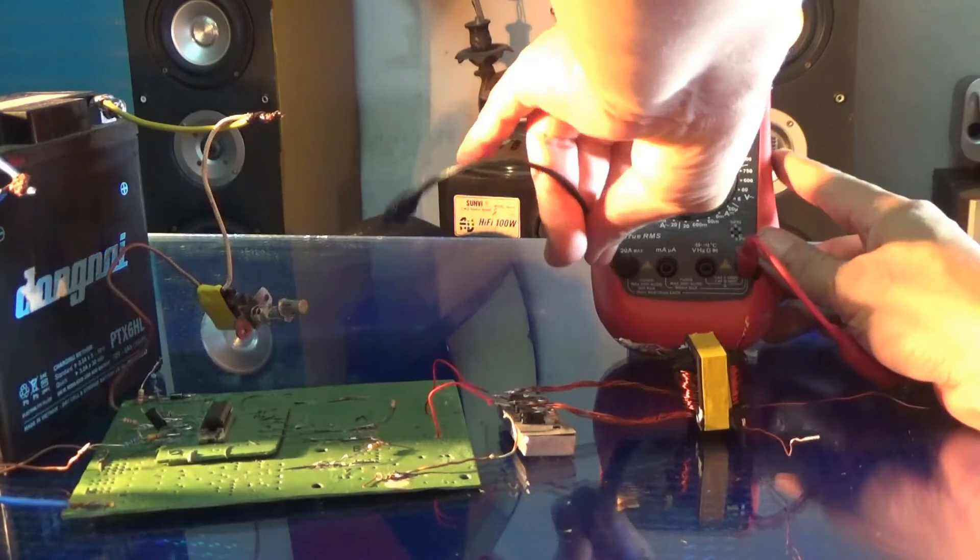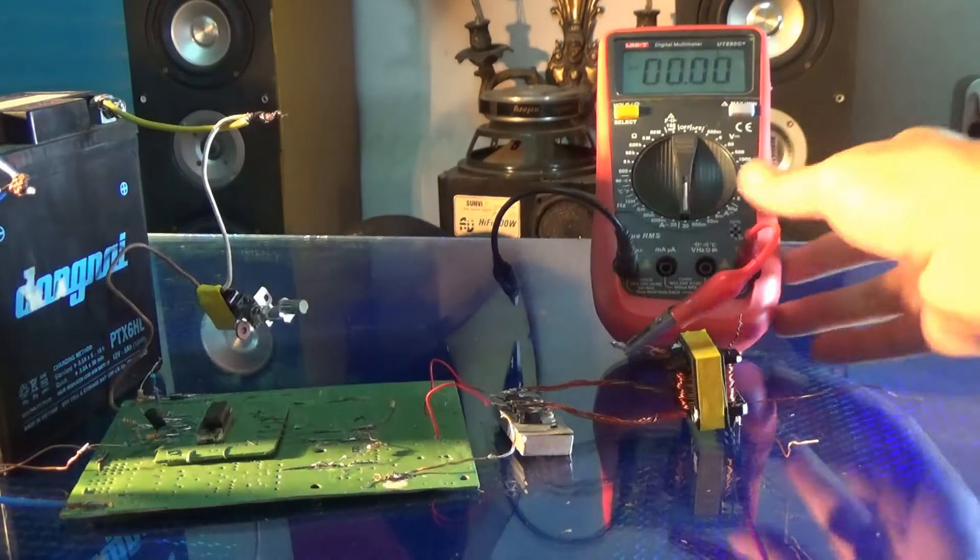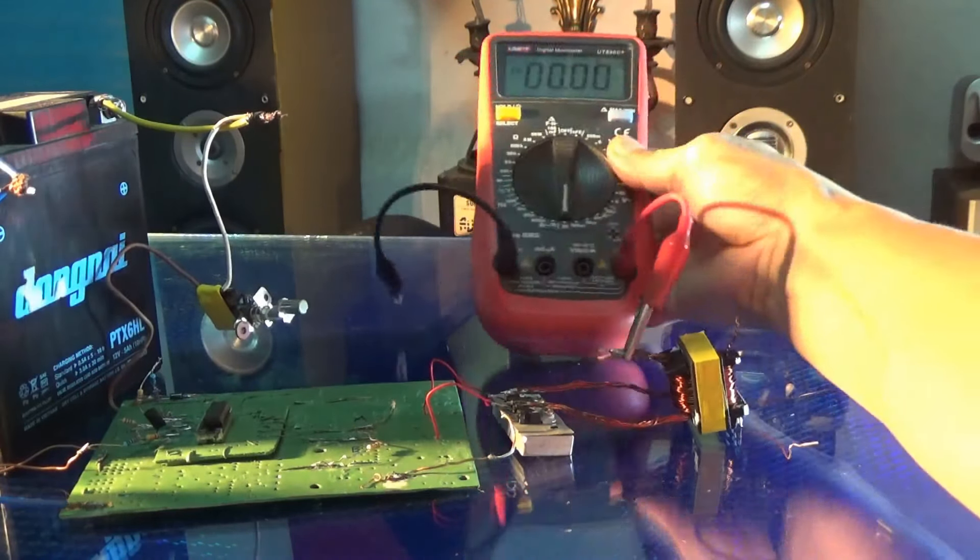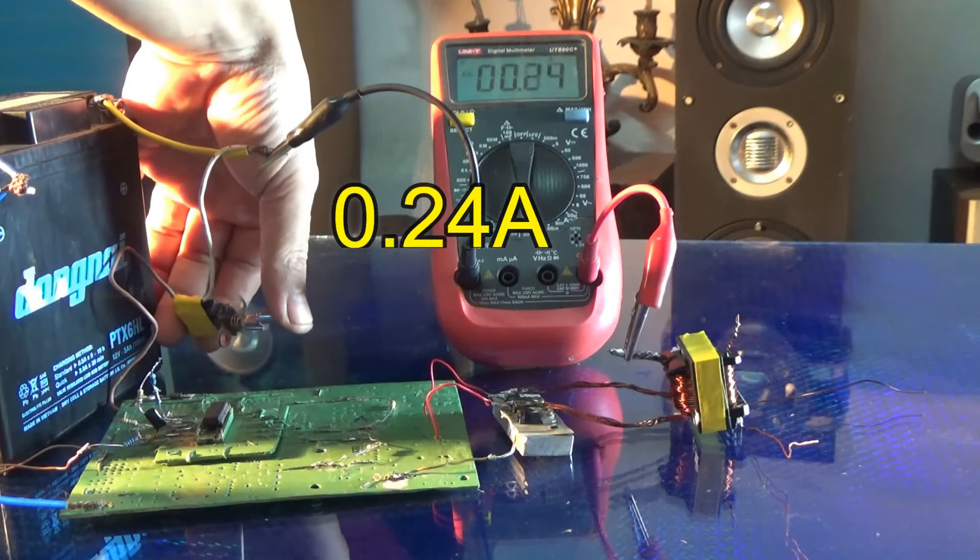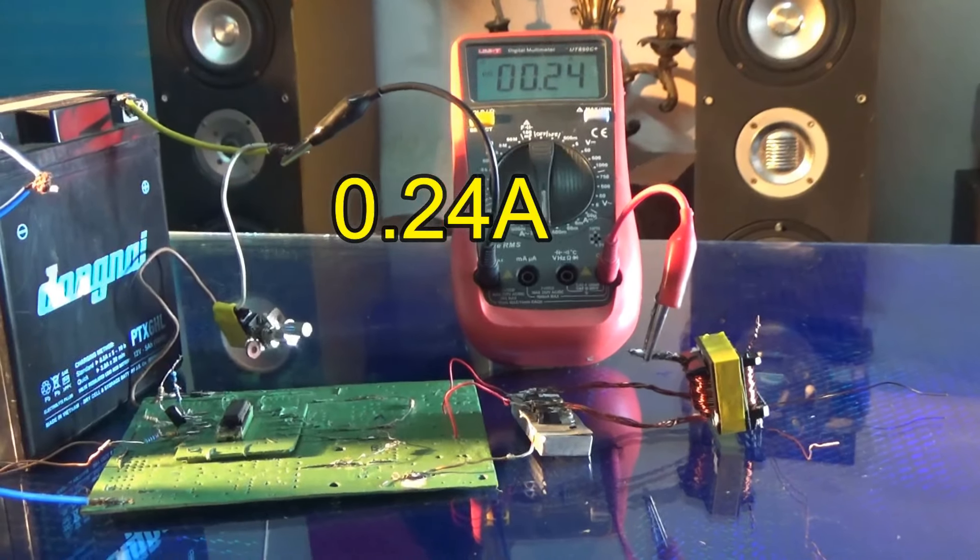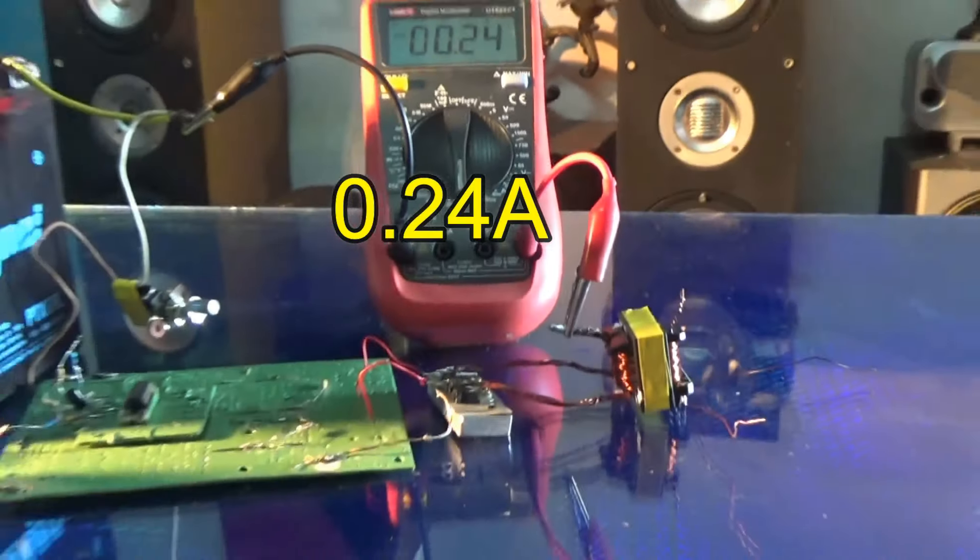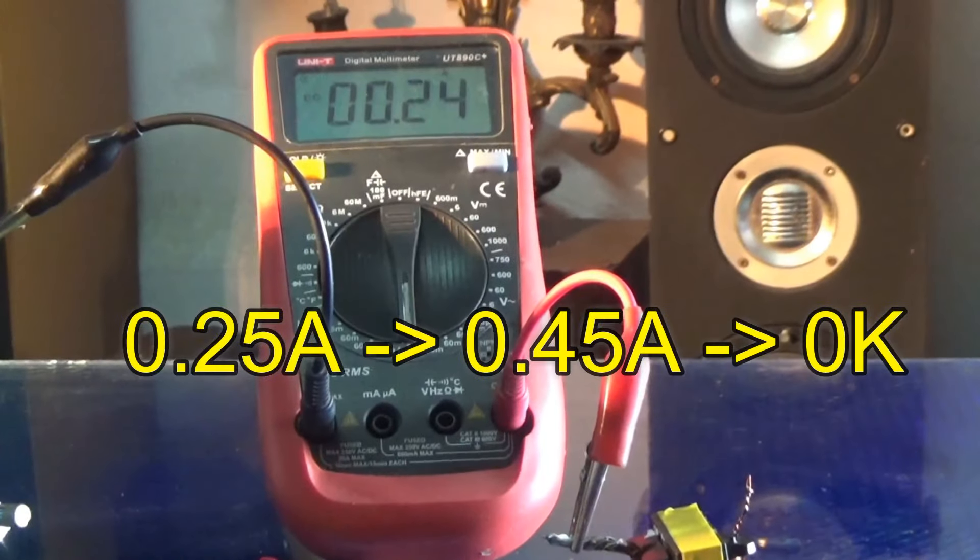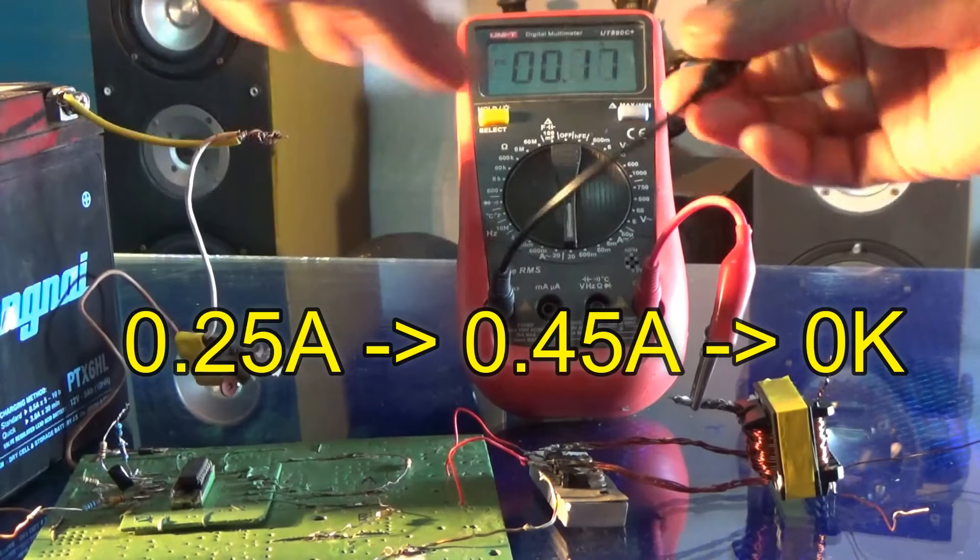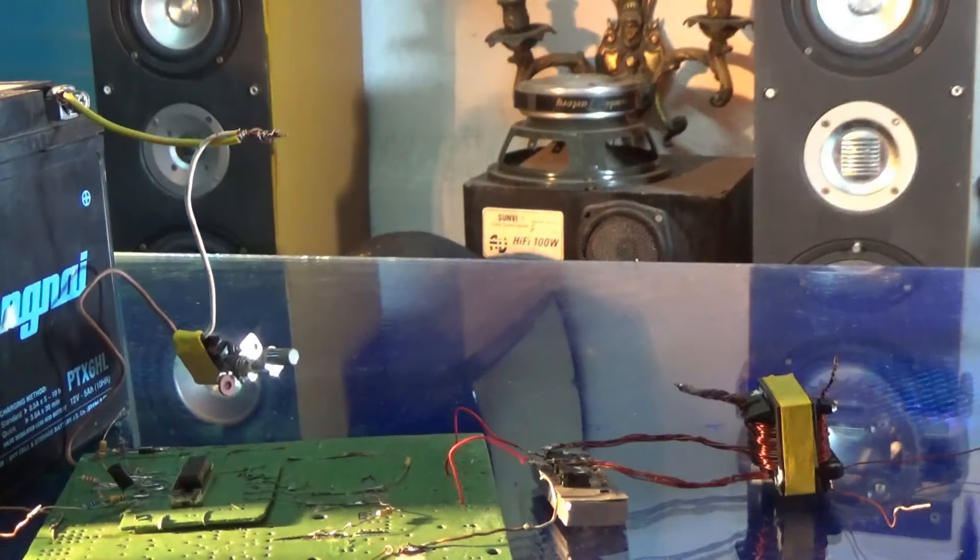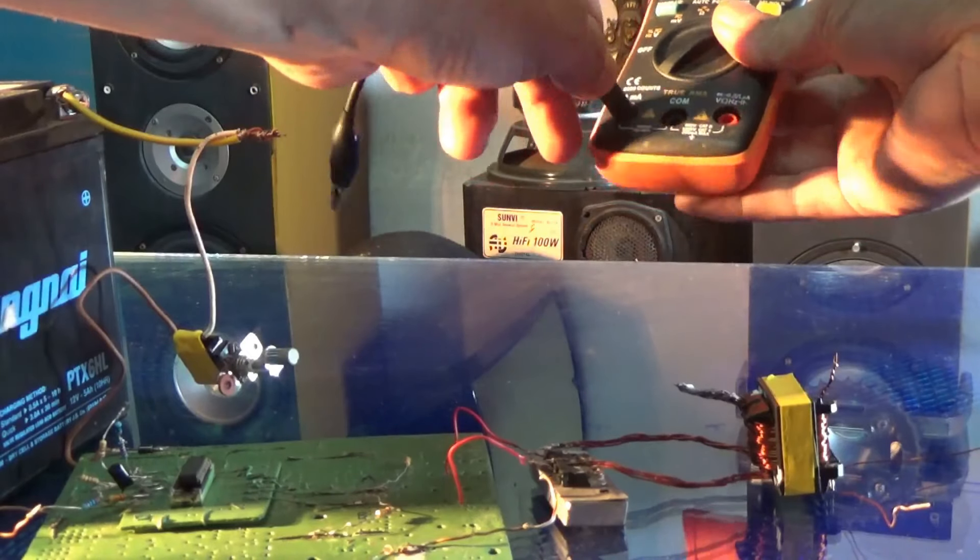Now I will use a multimeter to test the input current when there is no load. With no load, it is 0.24A. When you do this, it may be lower or higher, or it may not be exactly the same. But if it's around 0.25 to 0.45, or even 0.5A, it will still run and it's still okay.